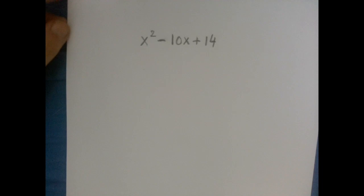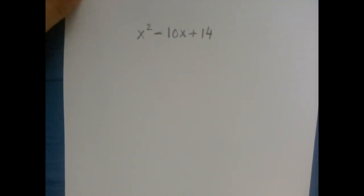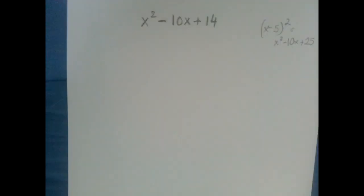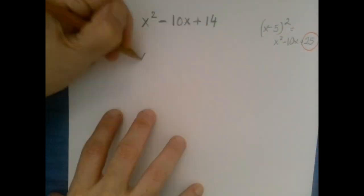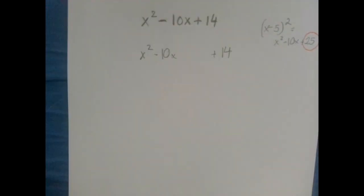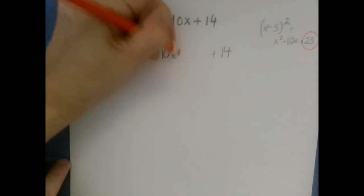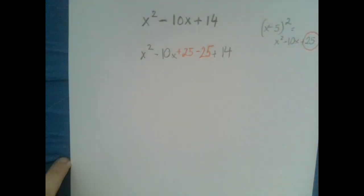Half of the linear coefficient is negative 5, so our complete square is x minus 5 squared, which when we expand will give us x squared minus 10x plus 25. Therefore, we're smuggling 25. So we write x squared minus 10x plus 14 with a little gap left for the smuggling step, and into the gap we write plus 25 minus 25.